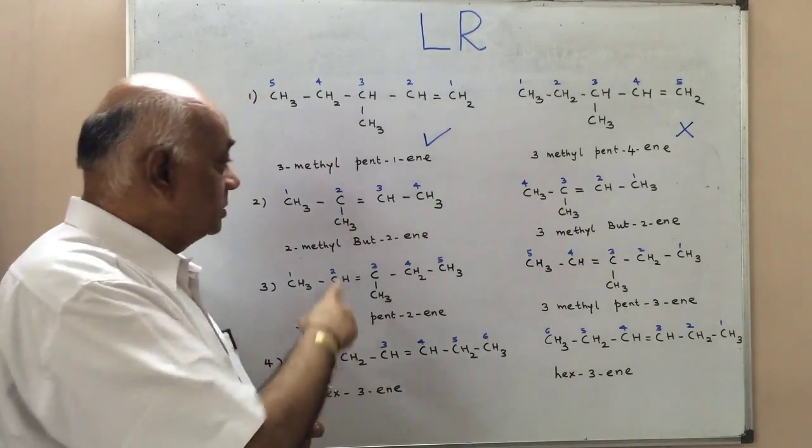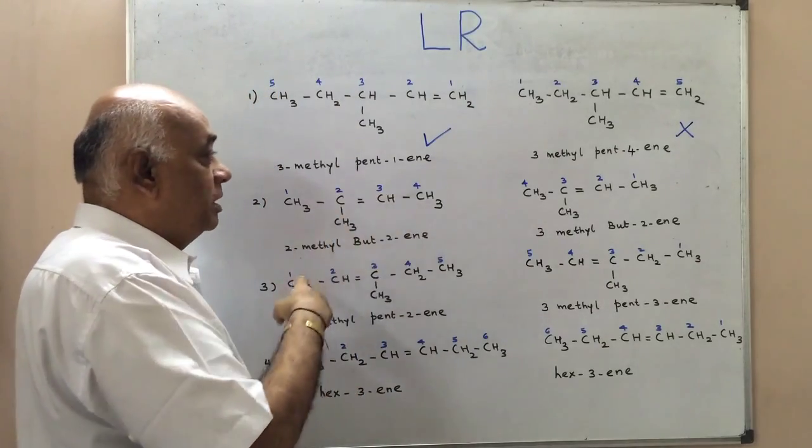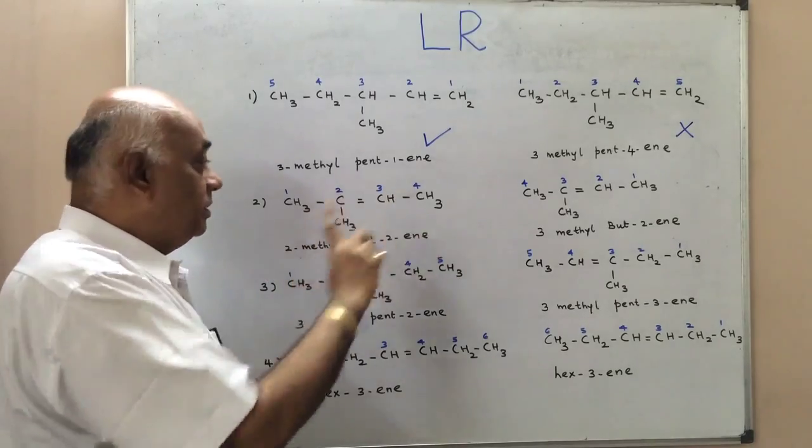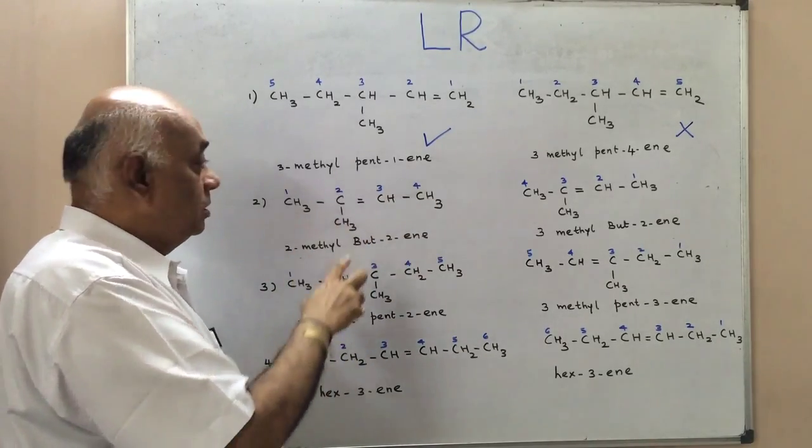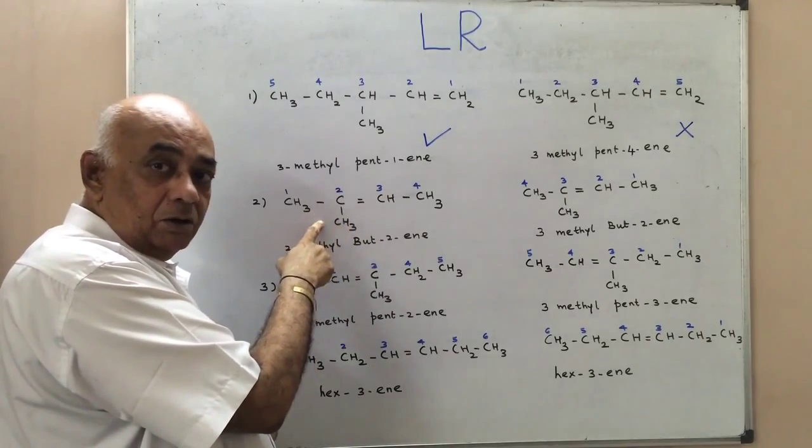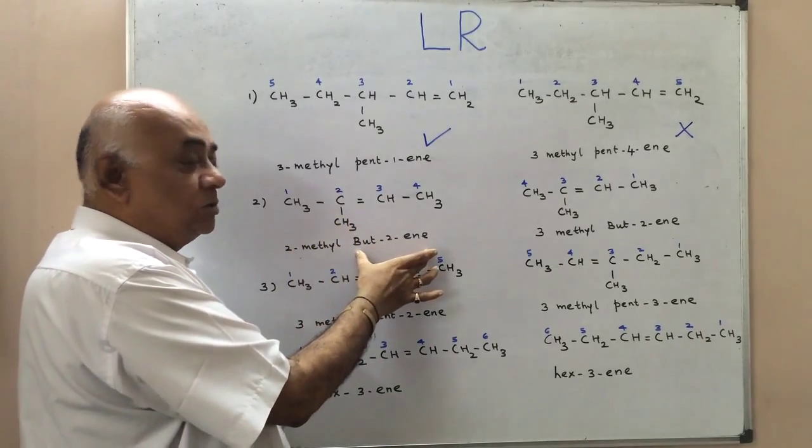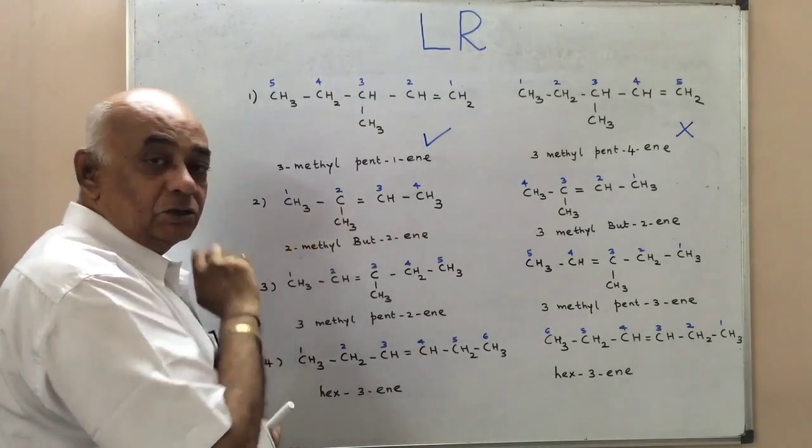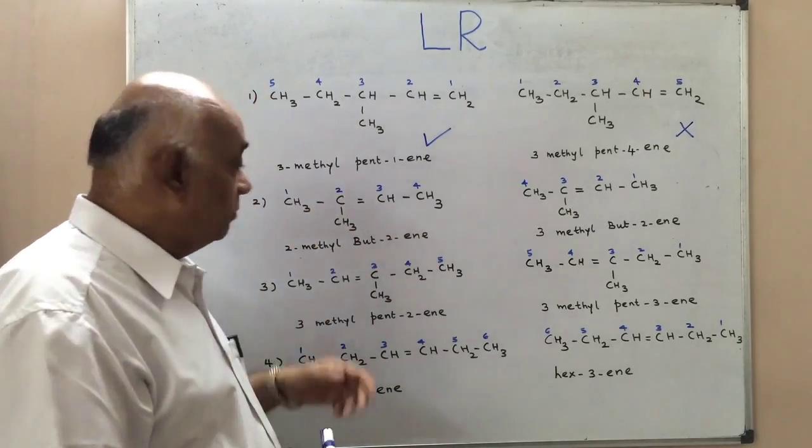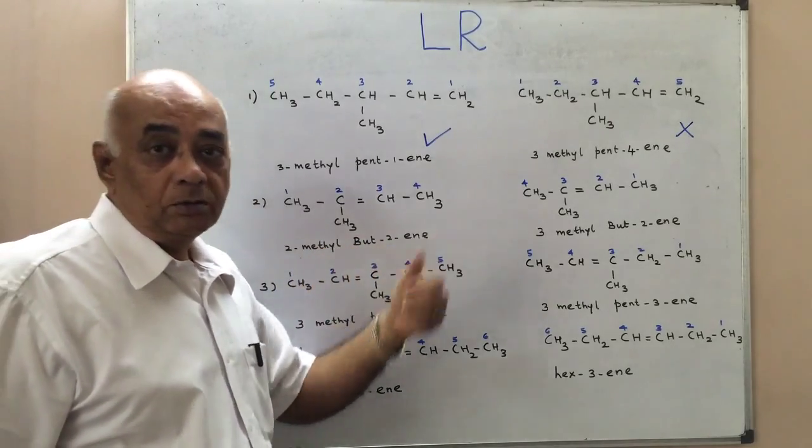Similarly, we will go to the second one for practice. The numbering has been done from left to right. It is a 4-carbon atom chain with a double bond on the second carbon, and therefore this becomes but-2-ene with a methyl group attached to the second carbon atom, which makes it 2-methyl-but-2-ene.